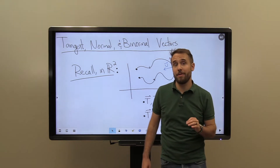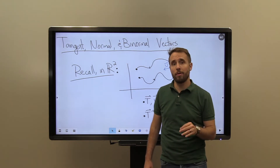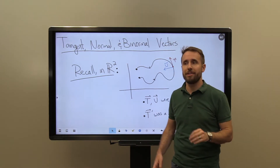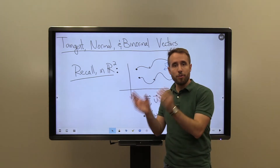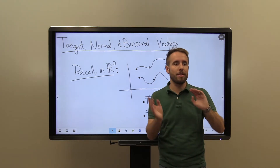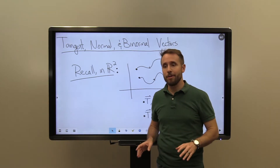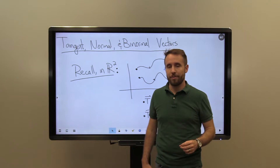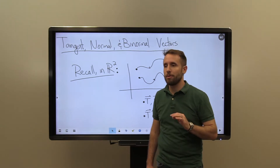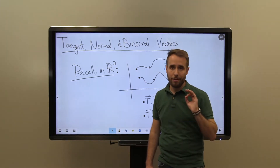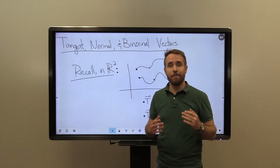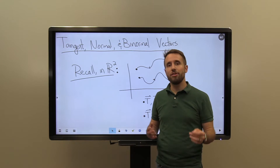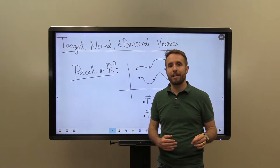In this video, we are going to see our first major case where two-dimensional space and three-dimensional space differ when it comes to parametrized curves. And it's going to come back to our old friend, the curvature, and our idea of a unit tangent and unit normal vector.